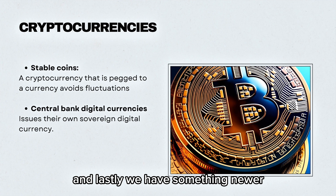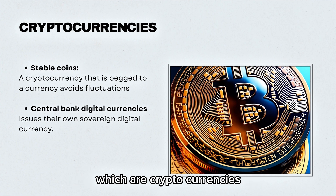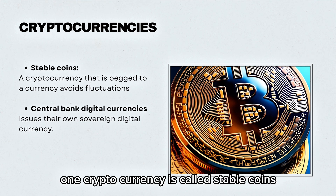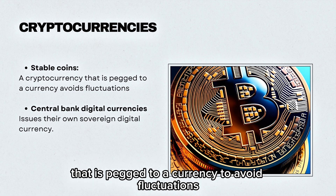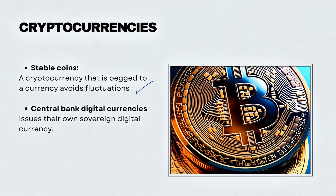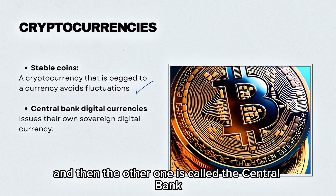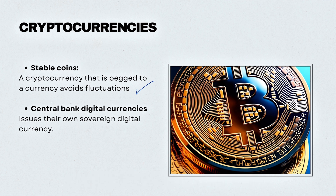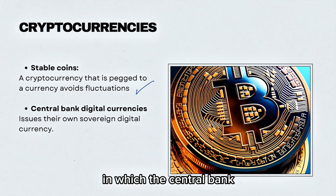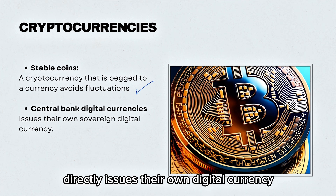Lastly we have something newer, which are cryptocurrencies. One cryptocurrency is called stable coins — this is a cryptocurrency that is pegged to a currency to avoid fluctuations. The other one is called the central bank digital currency, also known as a CBDC, in which the central bank directly issues their own digital currency.